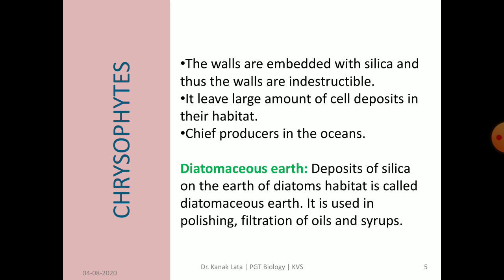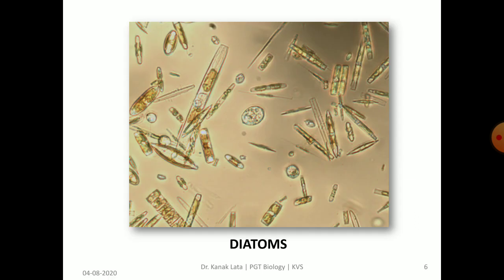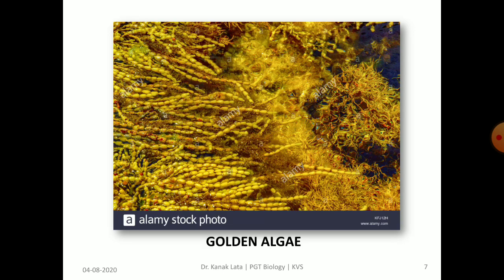Because the walls are embedded with silica, they are indestructible. Diatoms leave large deposits of silica on the earth, called diatomaceous earth. Diatoms are chief producers in the oceans. Diatomaceous earth is used in polishing, filtration of oil and syrups. In this figure you can observe diatoms and golden algae.